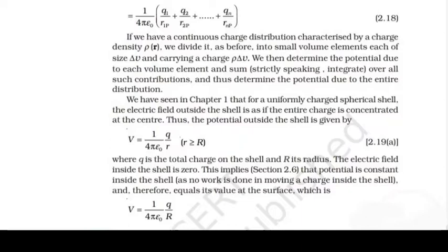For a continuous charge distribution characterized by charge density ρ, we divide it into small volume elements each of size ΔV carrying charge ρΔV. We determine the potential due to each volume element and sum — strictly speaking, integrate — over all such contributions to find the potential due to the entire distribution.